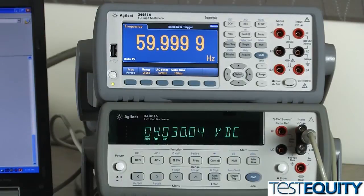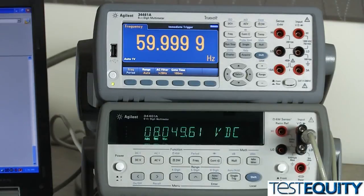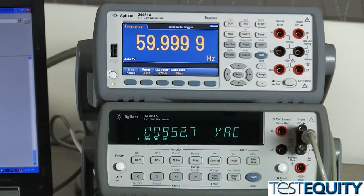We're measuring 2 volts DC, 4 volts DC, 6 volts DC, 8 volts DC. Now we're going to switch to the AC mode. And we have our 1 volt AC, 2 volts AC, 3 volts AC, 4 volts AC, and 5 volts AC.